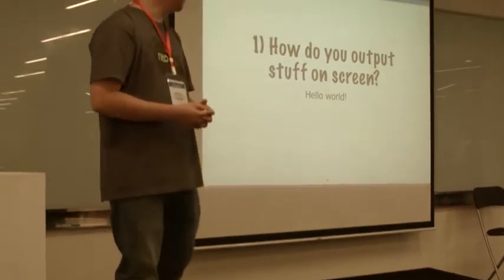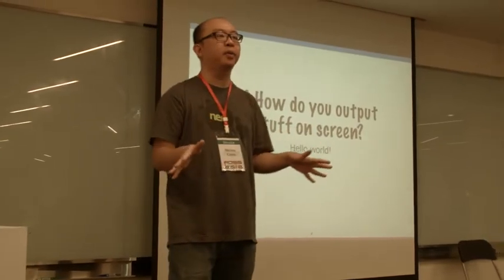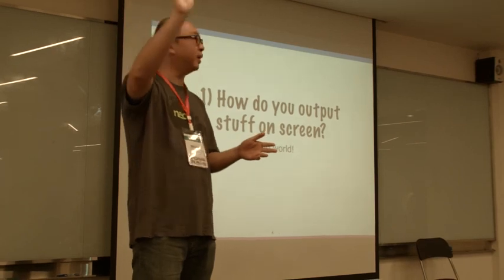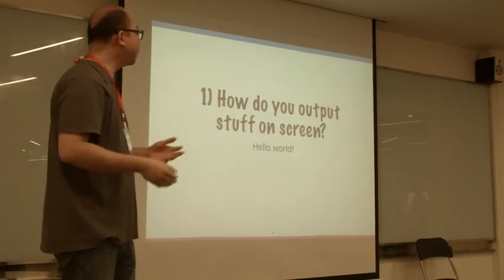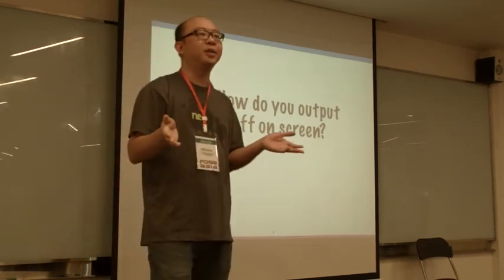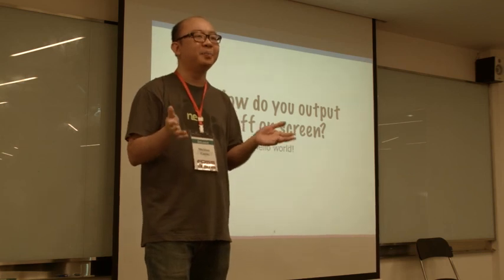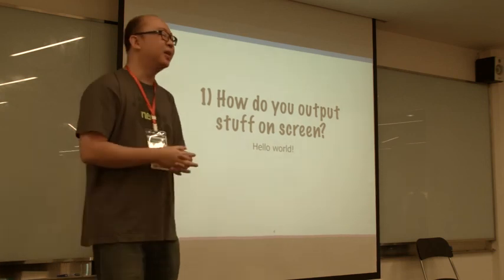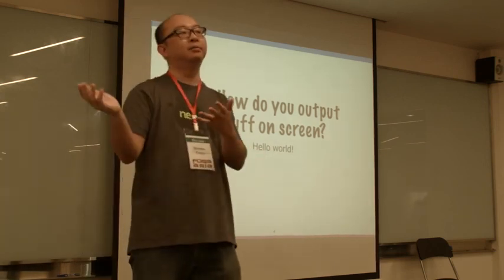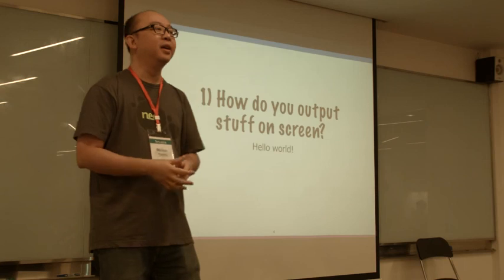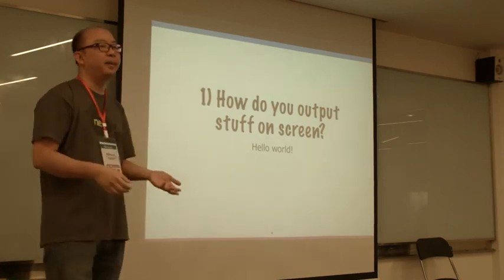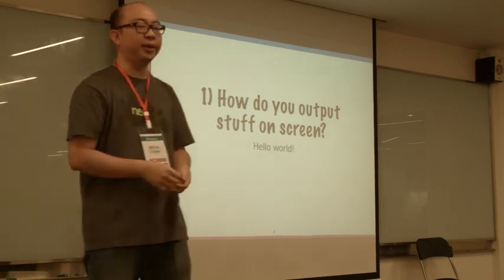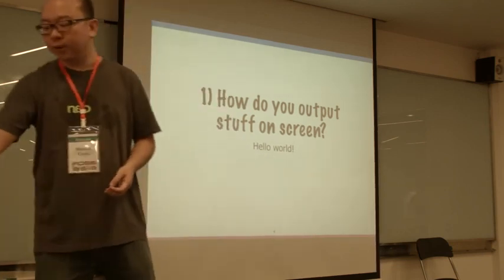The first thing I need to know when coming to any programming language — like recently I've been learning a bit about Go, Golang — is how do I print stuff on screen? The fundamental Hello World app. How do you get stuff printed on screen? In PHP you just do echo something or print something. In Ruby it's pretty much the same thing, like puts something, and it ends up on screen. That's the first thing you learn.